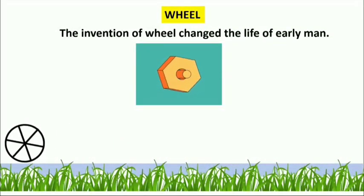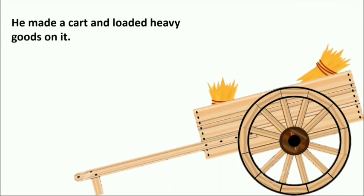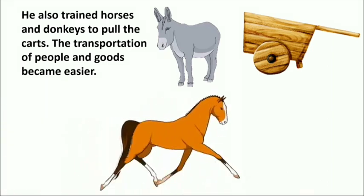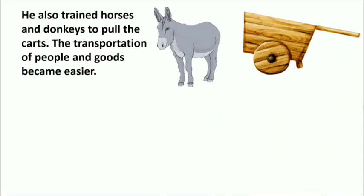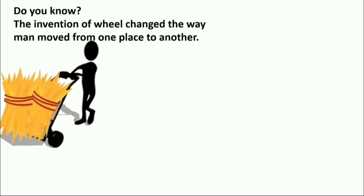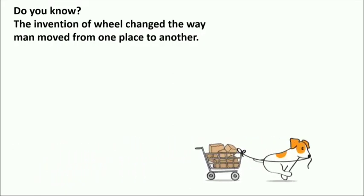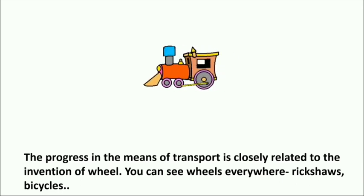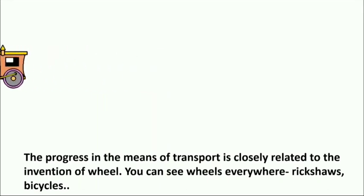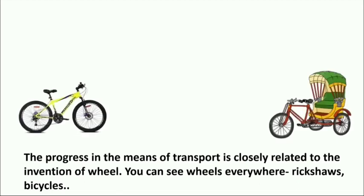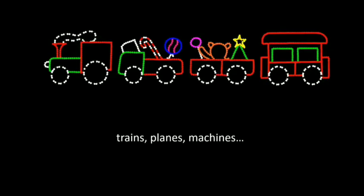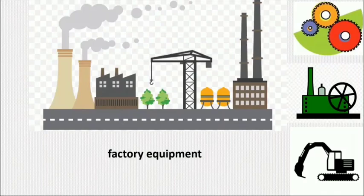The invention of the wheel changed the life of early man. He made a cart and loaded heavy goods on it. He also trained horses and donkeys to pull the carts, making transportation of people and goods much easier. The progress in means of transport is closely related to the invention of the wheel. You can see wheels everywhere — rickshaws, bicycles, skates, cars, trains, planes, and machines.